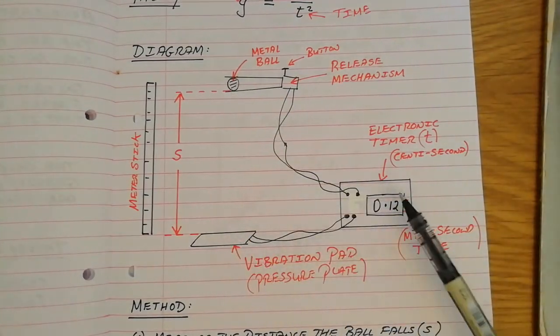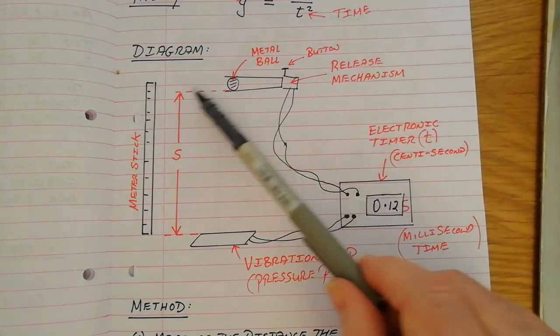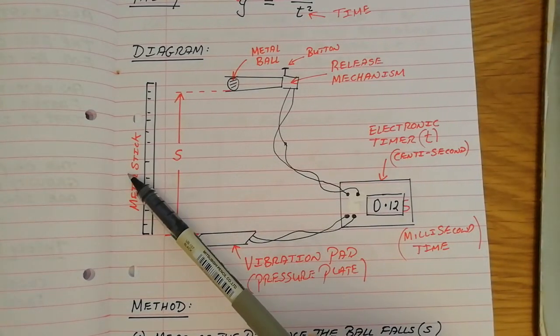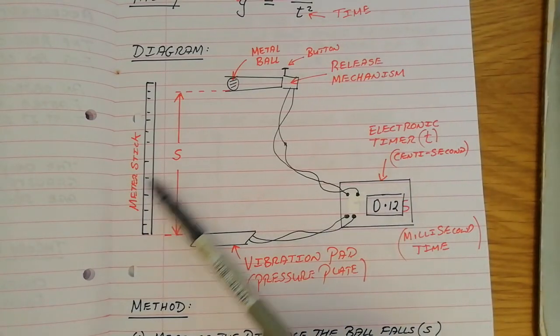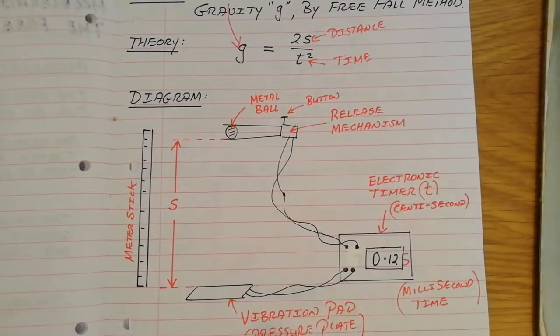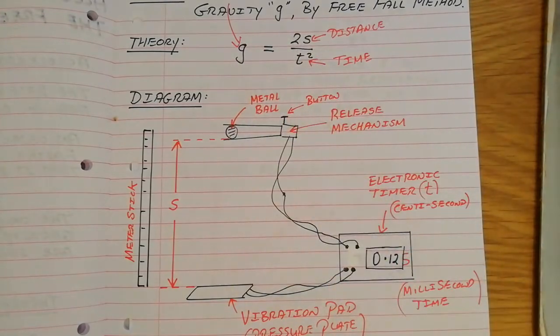There's the metal ball that falls. There's the electronic timer that times how long it takes to fall through that certain distance s, which is measured with a meter stick. You measure the time, you square it, you measure the distance, you double it, you throw everything into that formula, and the acceleration due to gravity g pops out from that formula.